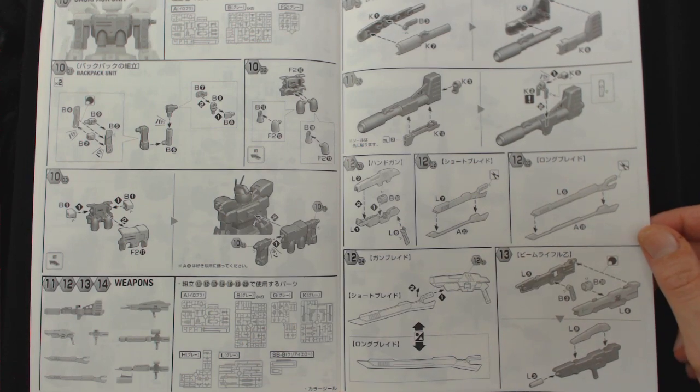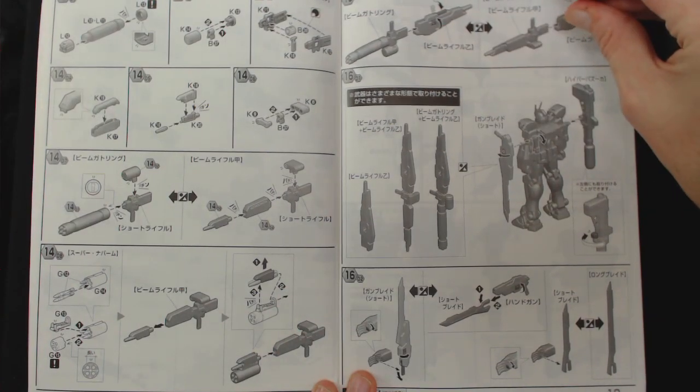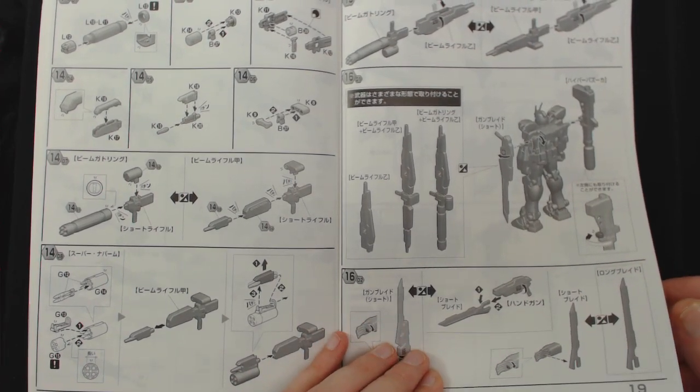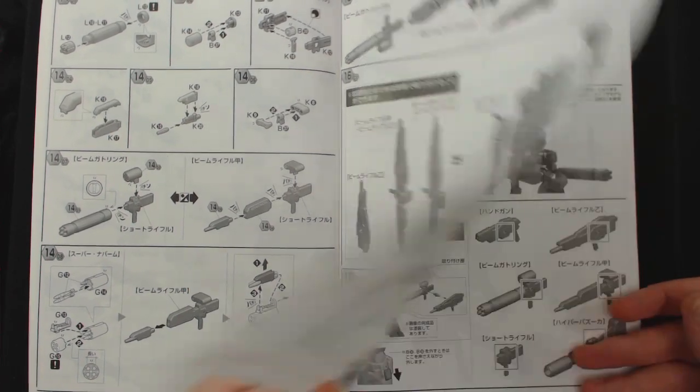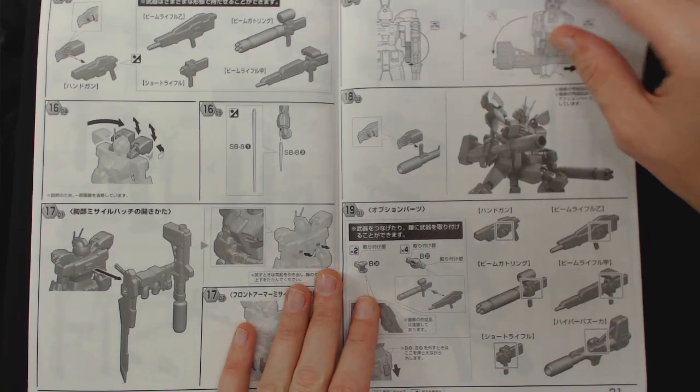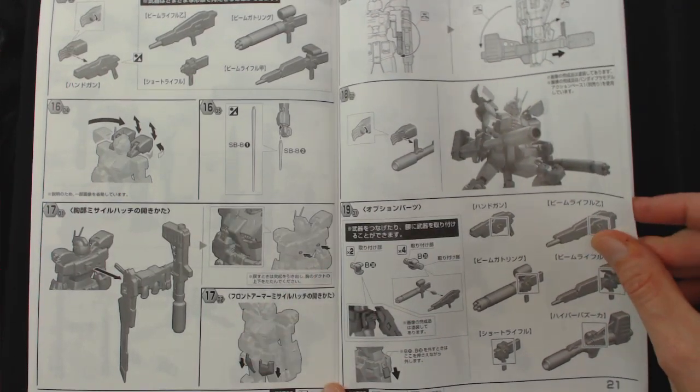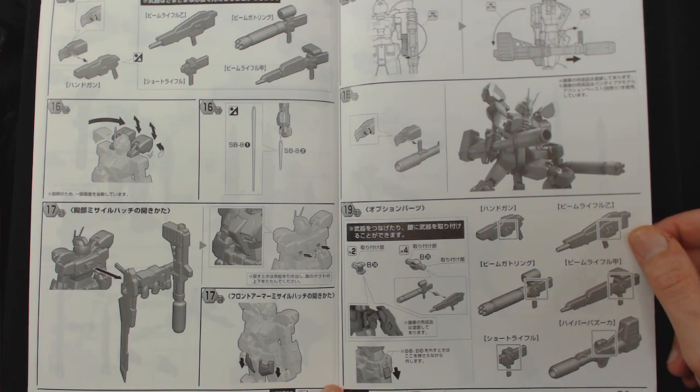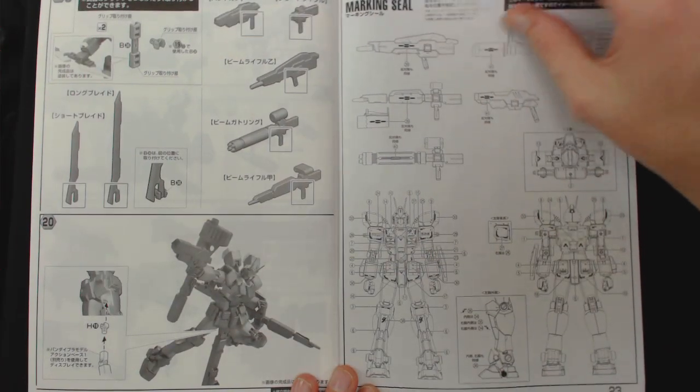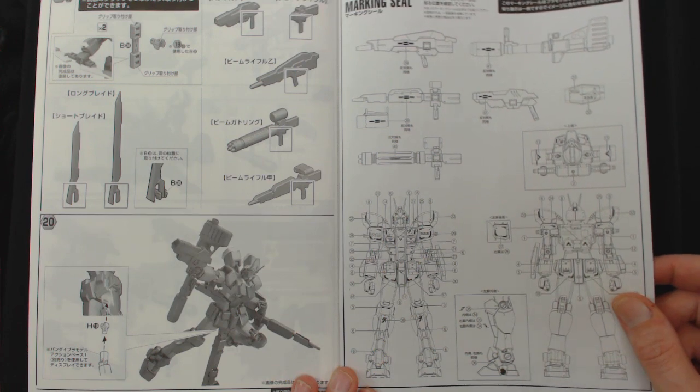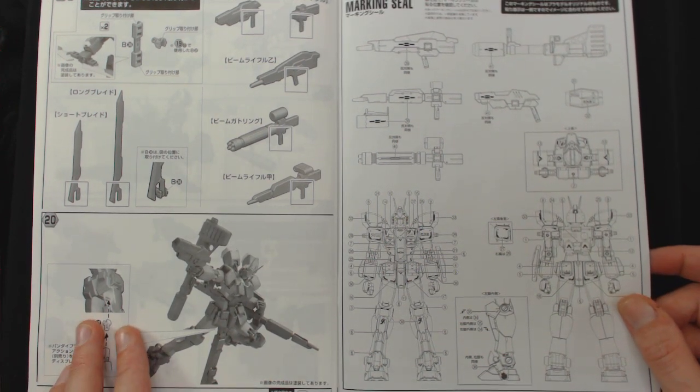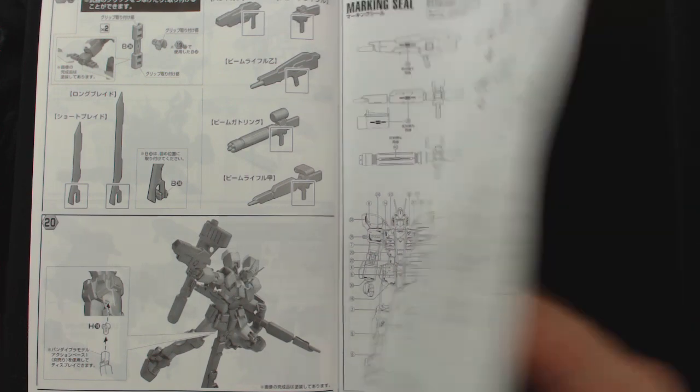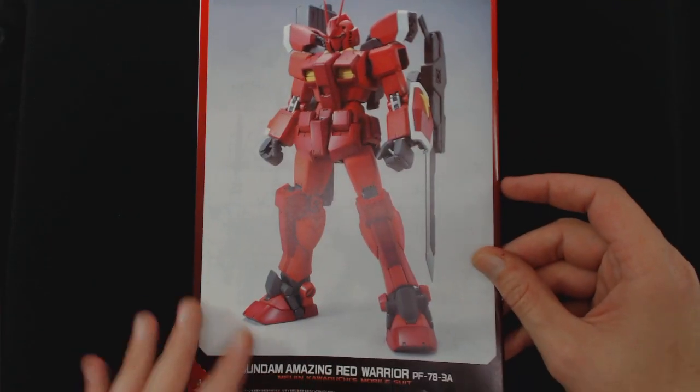All your weapon assembly. How to mount everything on him, all the optional different ways, how you can attach different things to different parts. Showing you how to attach to the stand, showing you where all the seals and decals go. And then you get the final back shot.